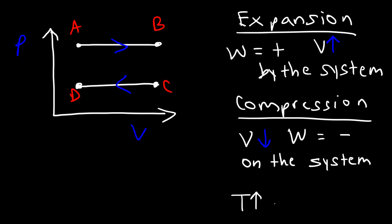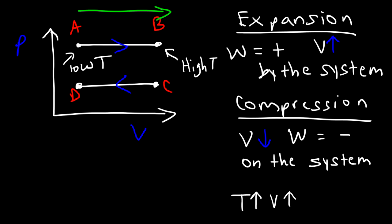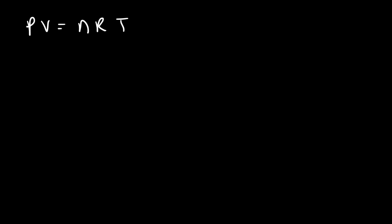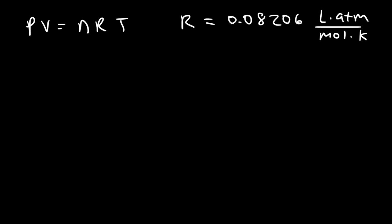As temperature increases, volume increases. So point B is at a higher temperature than point A. Traveling left to right, temperature increases causing volume to increase at constant pressure — described by Charles' law. You can also use the ideal gas law to relate temperature, pressure, and volume. If pressure is in atm and volume in liters, use R = 0.08206 L·atm/(mol·K).